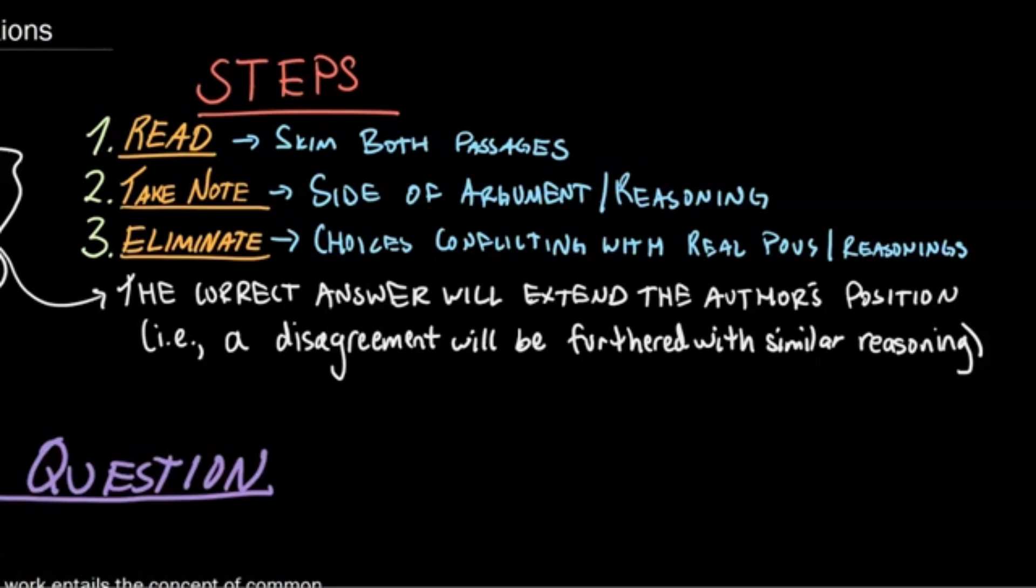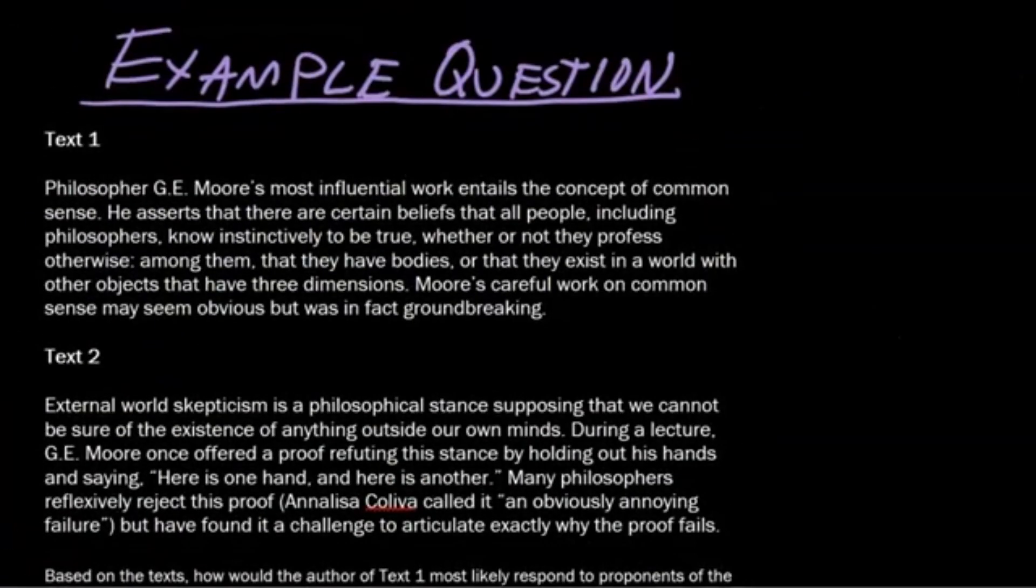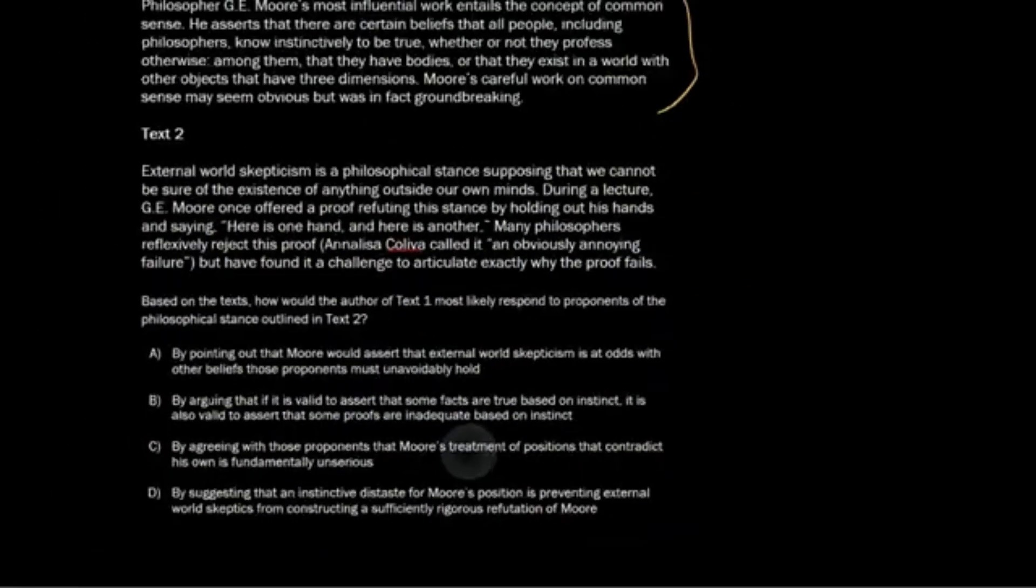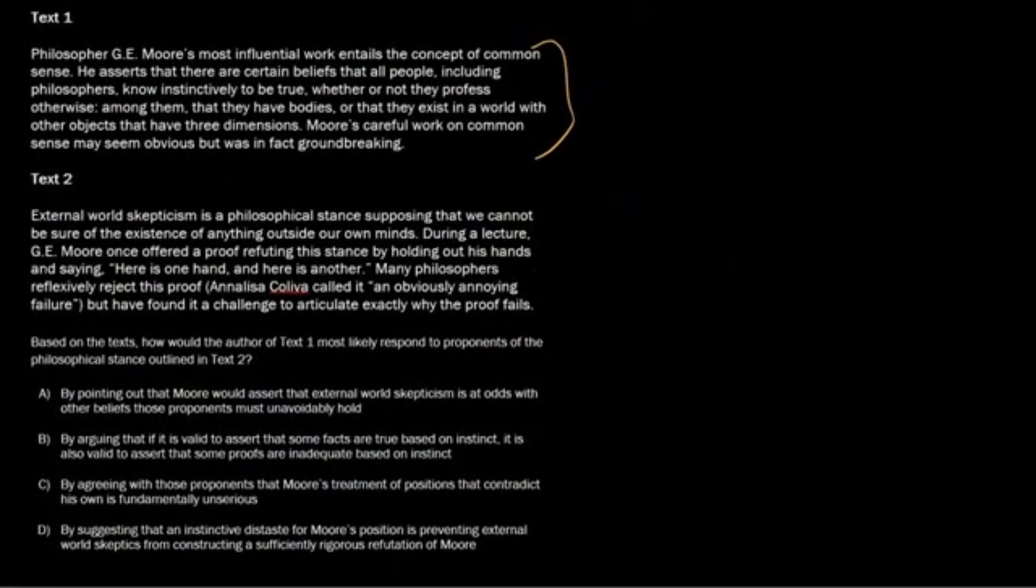Now, remember that the correct answer, the correct answer will extend the author's point of view. It will extend their ideology. What does that mean? Well, in each text, there's going to be some sort of ideology that's stated, some sort of point, choice, view, opinion, whatever, right? And they're going to back that up with some sort of reasoning. But what your answer choice should do is your answer choice should kind of continue their logic, continue their line of reasoning. It shouldn't conflict with it. It shouldn't do anything like that. Let's take a look and just read these. I'm not going to read them word for word. I'm just going to skim them. I'm going to give you a second here to skim them, maybe see if you can answer the question.